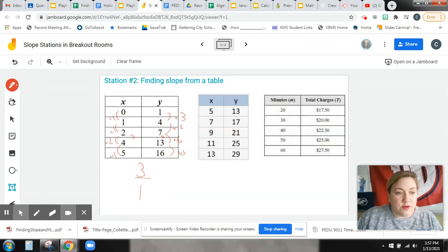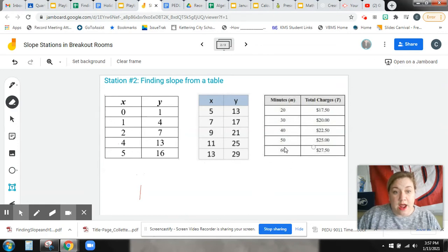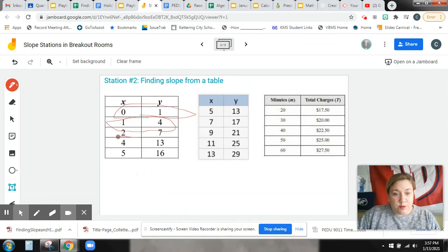The other thing that we could have done here, if we didn't do any of that, we could have simply picked two points. This is a table, right? So this represents two points on a graph. So we could have just picked this one, and we could have picked this one. Or if you prefer these two, you could do those two.